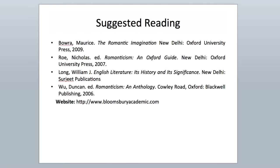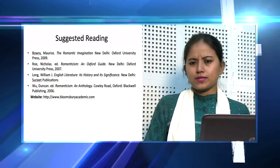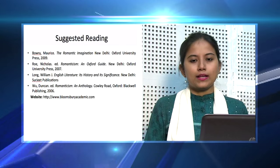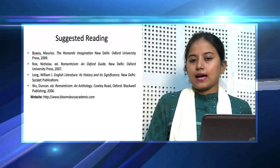For suggested reading, you might refer to The Romantic Imagination by Maurice Bowra, Romanticism: An Oxford Guide — available in a good library — English Literature: Its History and Its Significance by William J. Long, which is commonly available, and Romanticism: An Anthology by Duncan Wu. A helpful website is www.bloomsburyacademy.com. There are many websites that will be helpful, but you will do well to note the important characteristics and the ideals who led this movement ahead. With this I come to the end of today's program. Thank you, dear learner, and all the best.